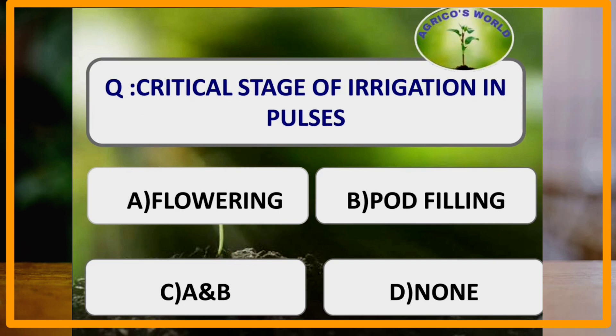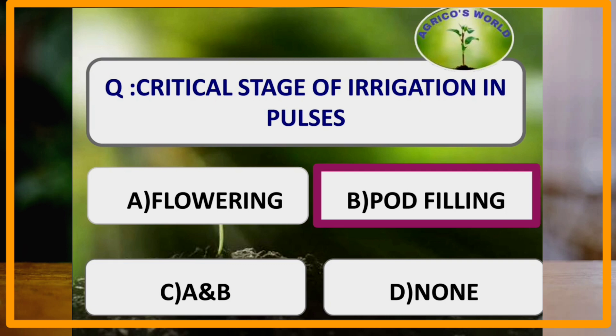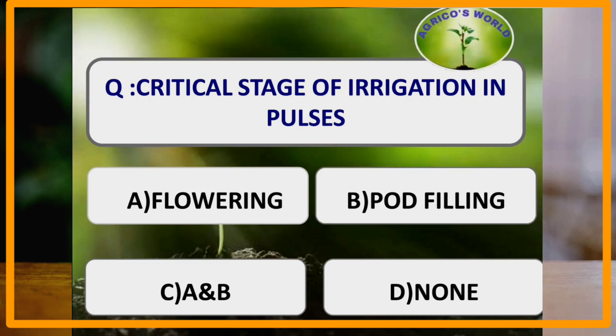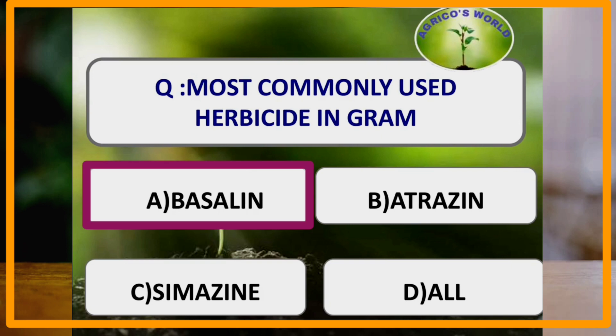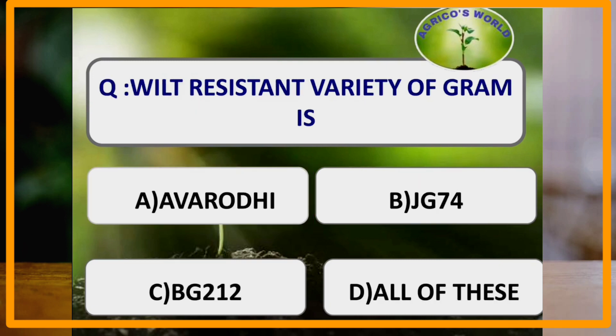Critical stage of irrigation in pulses is pod filling stage. Most commonly used herbicide in gram is Basalin. Basalin is the most commonly used herbicide in gram.